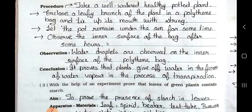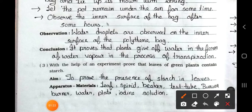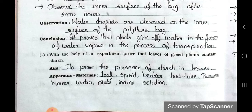See the observation: water droplets are observed on the inner surface of the polythene bag. Conclusion: it proves that plants give off water in the form of water vapor in the process of transpiration.